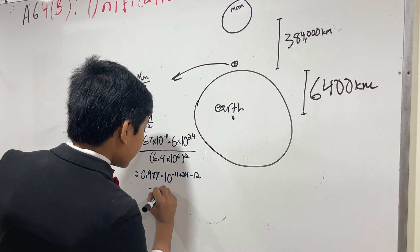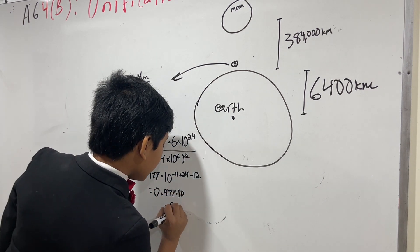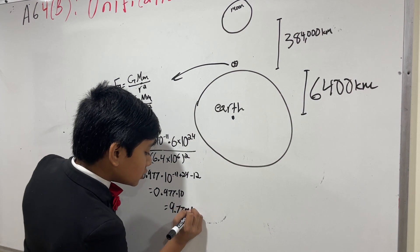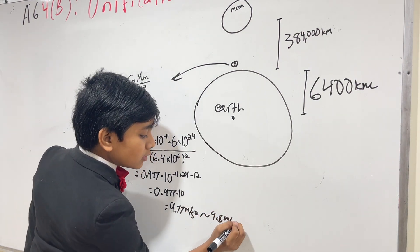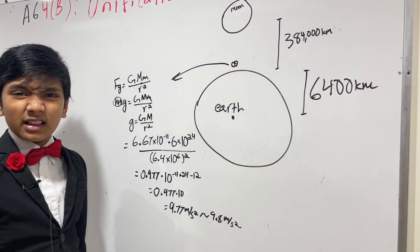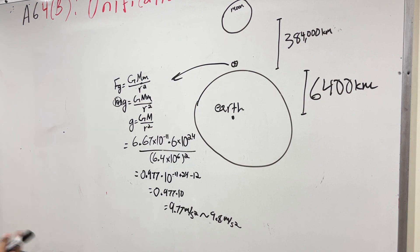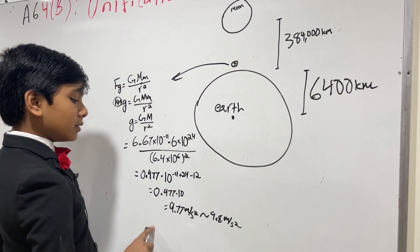So, that just gives us 0.977 times 10, which is 9.77 meters per second squared, close to 9.8 meters per second squared, but we didn't use exact numbers. So, that's why it's a little less than the actual value. So, that was a pretty close estimate.